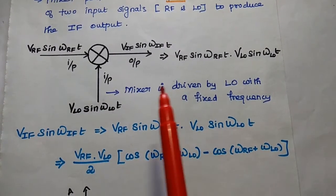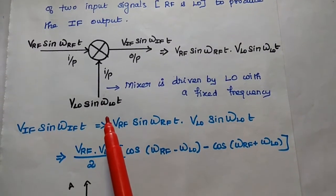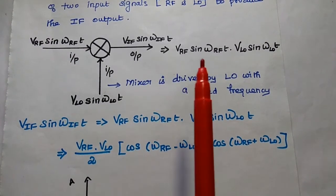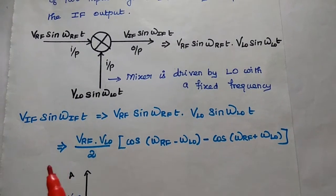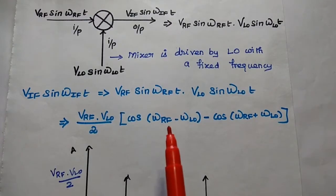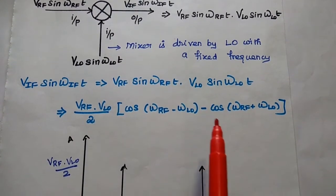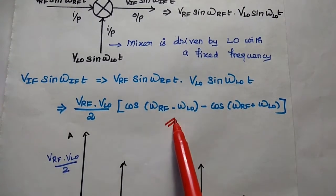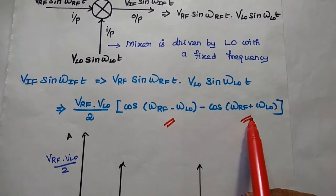The mixer is driven by the fixed frequency of the local oscillator. Multiplying the two input signals gives (V_RF · V_LO)/2 times [cos(ω_RF − ω_LO)t − cos(ω_RF + ω_LO)t]. This represents the difference frequency and the sum of the frequencies respectively.